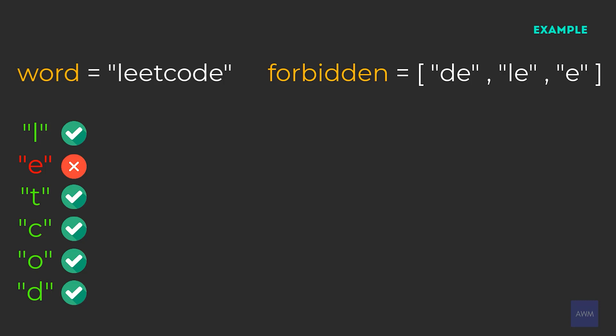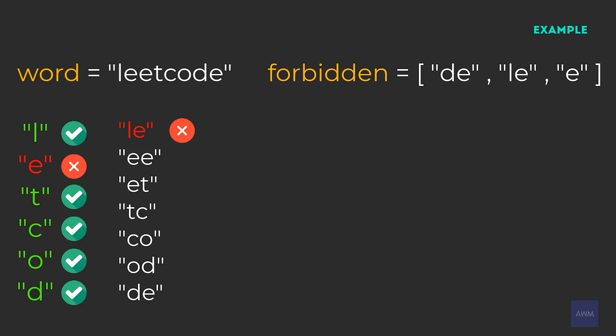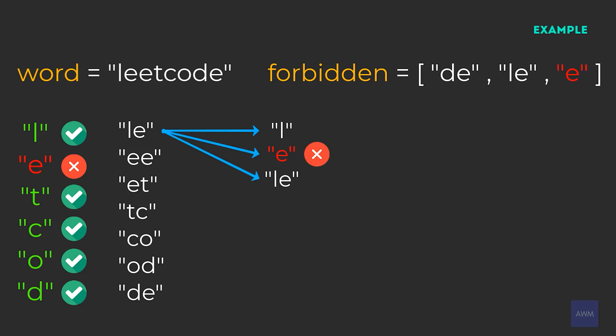Now for substrings of length two, we have LE, EE, ET, TC, CO, OD, and DE. Looking at substring LE — this would not be considered valid. The substrings of LE would be L, E, and LE itself. E, as we already identified, is not valid because it's in forbidden, which automatically makes LE not valid. LE is also in forbidden, so there are two substrings that make this not valid.